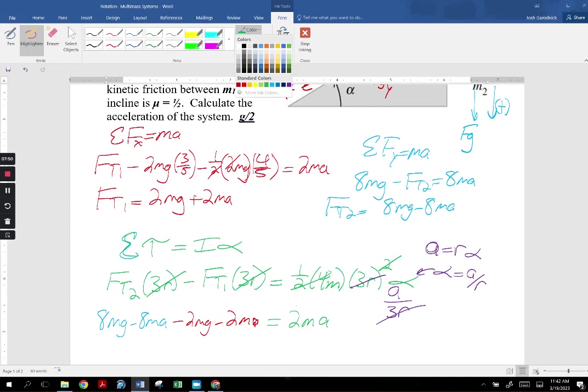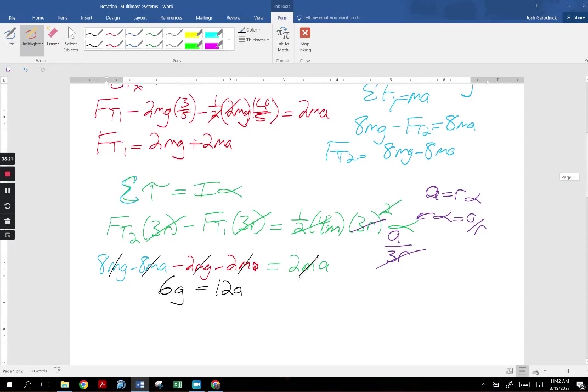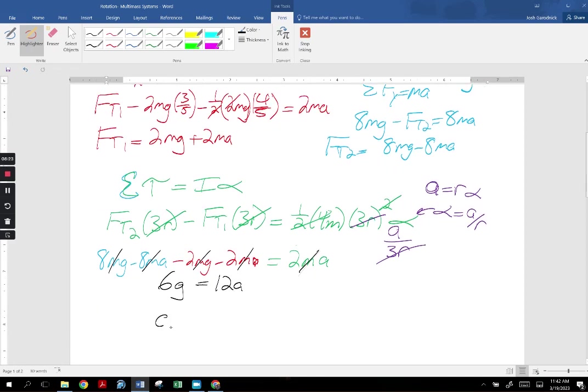It's cleaned up kind of nicely. First of all, we can get rid of the M's. Let's combine the G's and the A's and we'll call it a day. So we've got 6G over here. And I've got 8A, 10A equals 12A total. And if I solve for A, I get A equals G over 2.